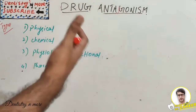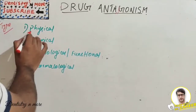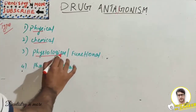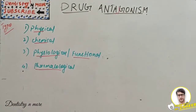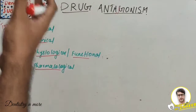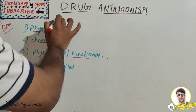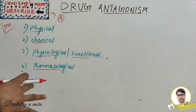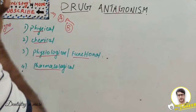Understanding antagonism is important not just for academics but also from a clinical point of view — knowing which drugs should not be given together. Antagonism is broadly classified into: physical antagonism, chemical antagonism, physiological or functional antagonism, and pharmacological antagonism. These are the various mechanisms by which drug B interferes with the action of drug A.